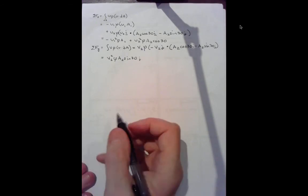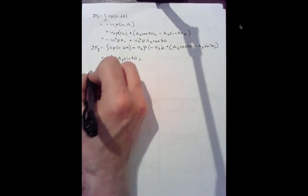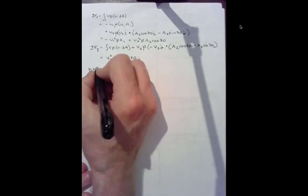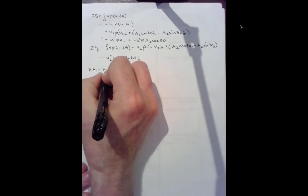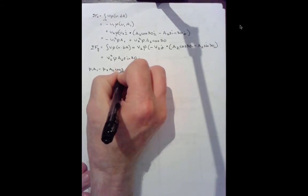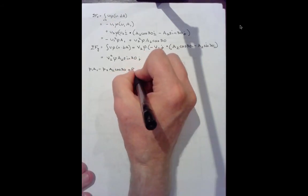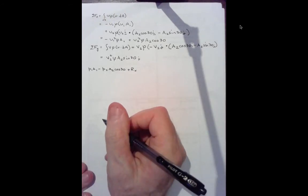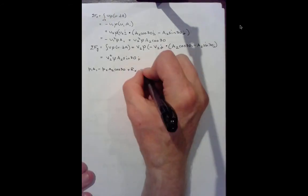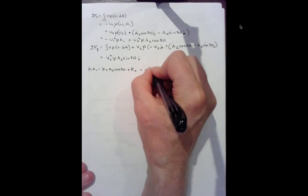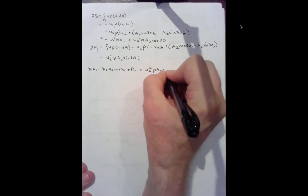And now we'll start to put in numbers. The sum of the forces in the x direction is p1 a1 minus p2 a2 cosine 30, that's the pressure change, plus the reaction force in the x direction. That equals u2 squared rho a2 cosine 30.